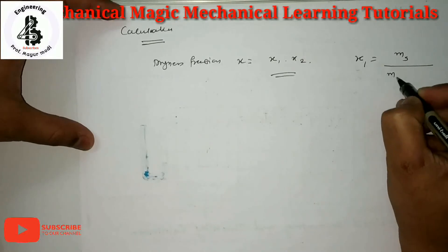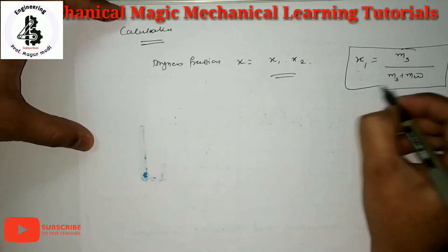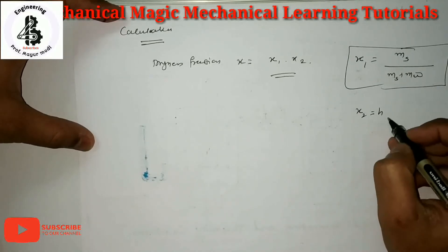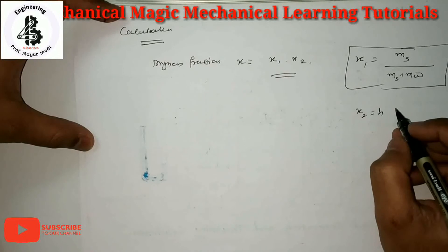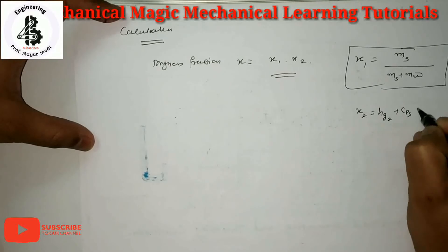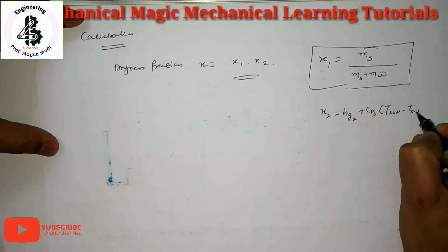And x2 is from the throttling calorimeter: HG2 times (T superheated minus T saturated) minus HF1, divided by HFG1.